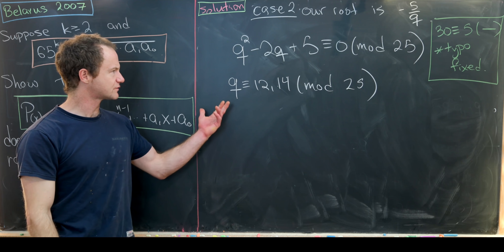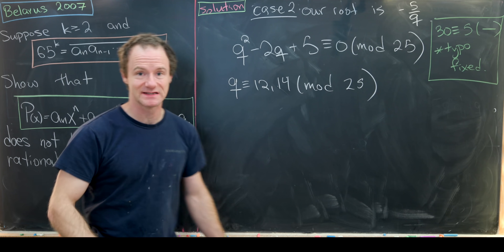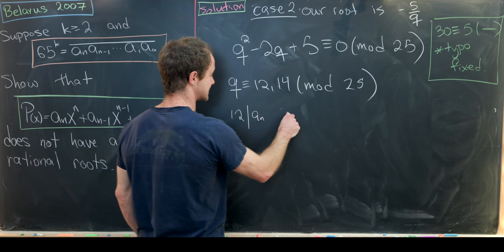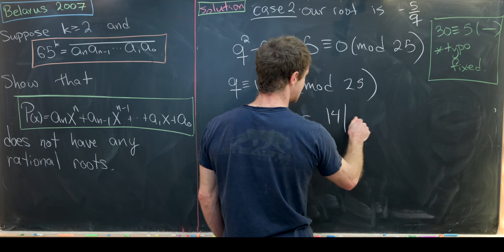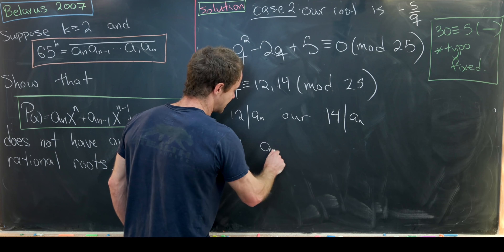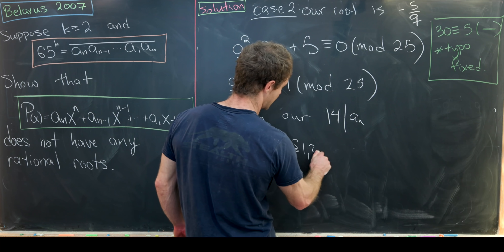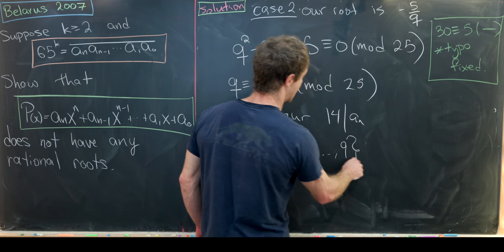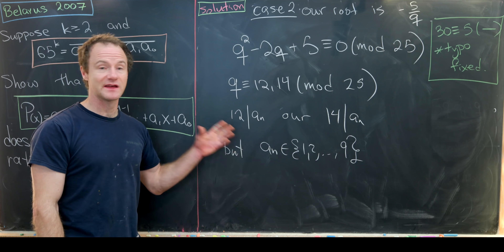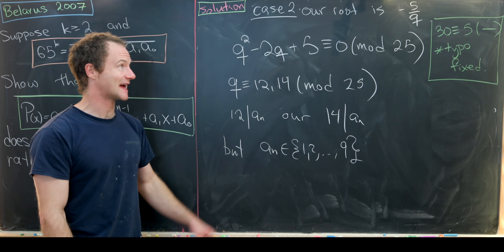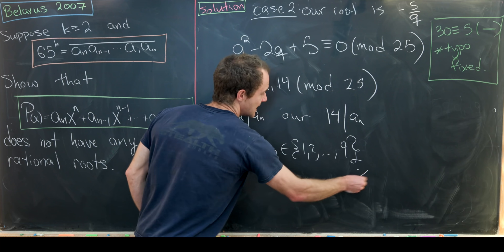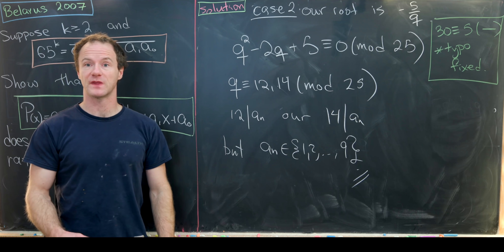But recall q divides the leading coefficient a_n, which comes from {1, 2, ..., 9}. Neither 12 nor 14 can divide any number smaller than itself, so this is impossible. That eliminates the case p = 5, and therefore there are no possible rational roots. This finishes the proof.